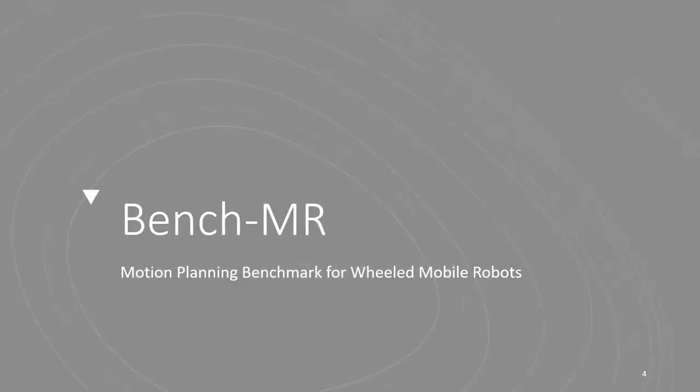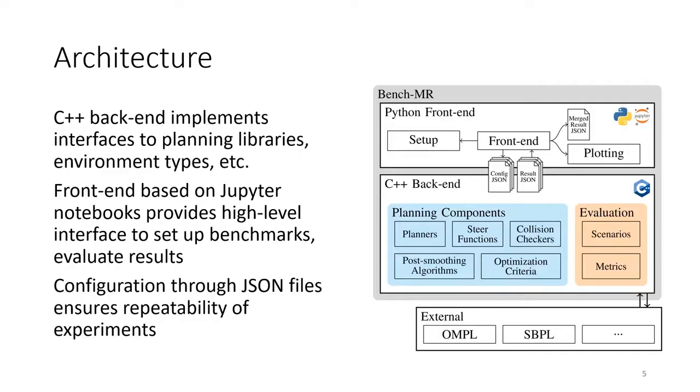In the following, we give an overview of BenchMR. The main functionality is implemented in C++. There, we interface with external libraries, such as OMPL and SBPL. We supply different implementations of the planning components, including the extend functions, optimization objectives, and post-smoothing algorithms, among others.